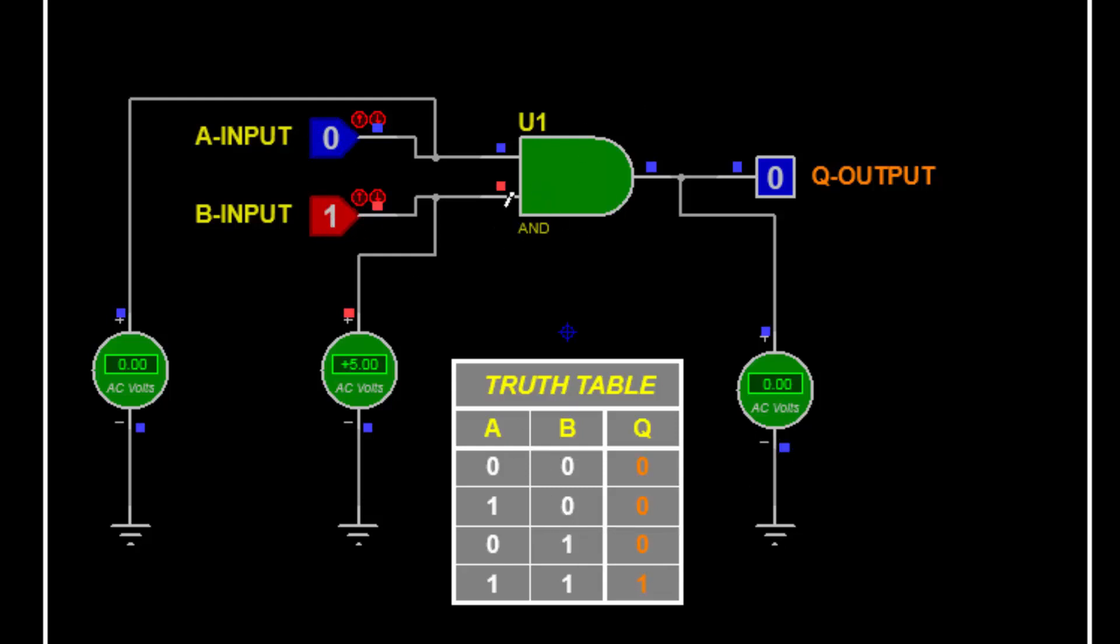Because it is making dot function, multiply function. If we have both inputs high, the output will be high. We applied 5 volt, we applied 5 volt, the output is 5 volt. So 1, that means logic level 1, logic level 1.